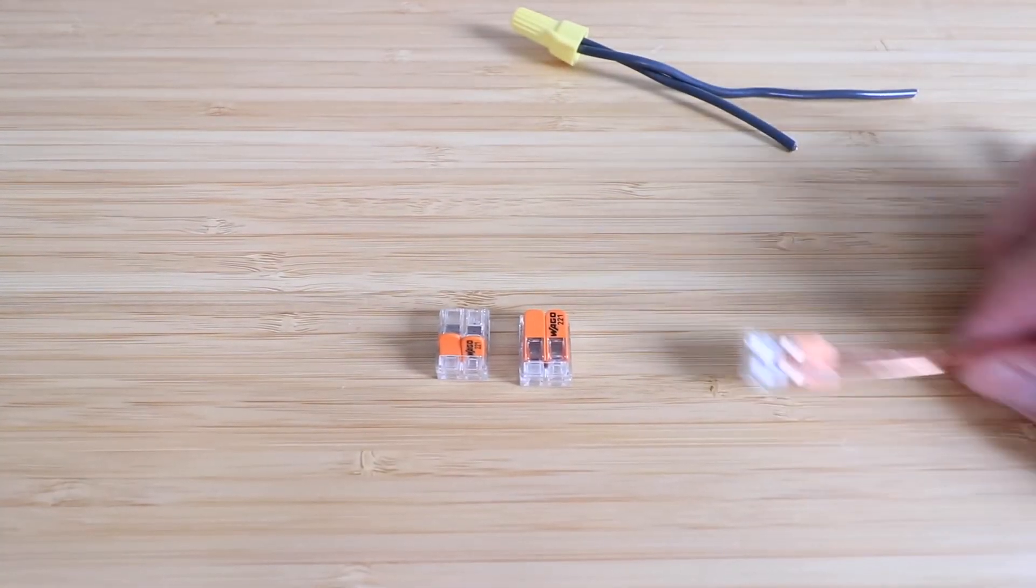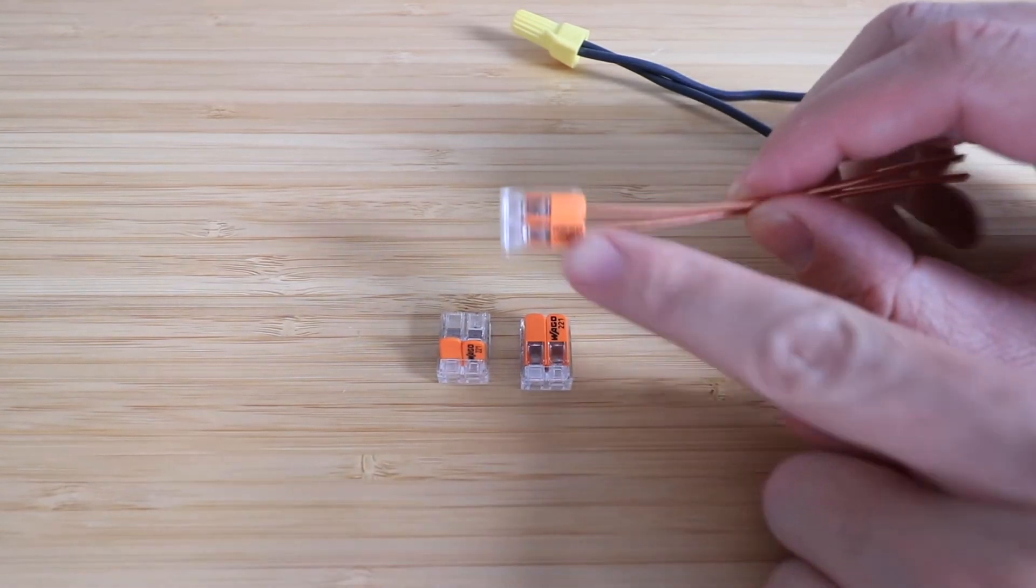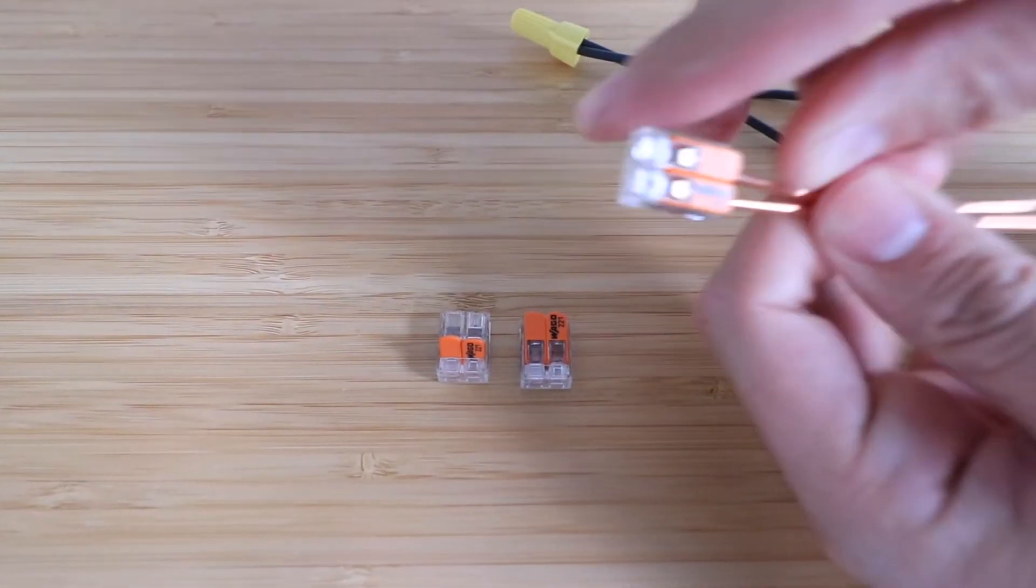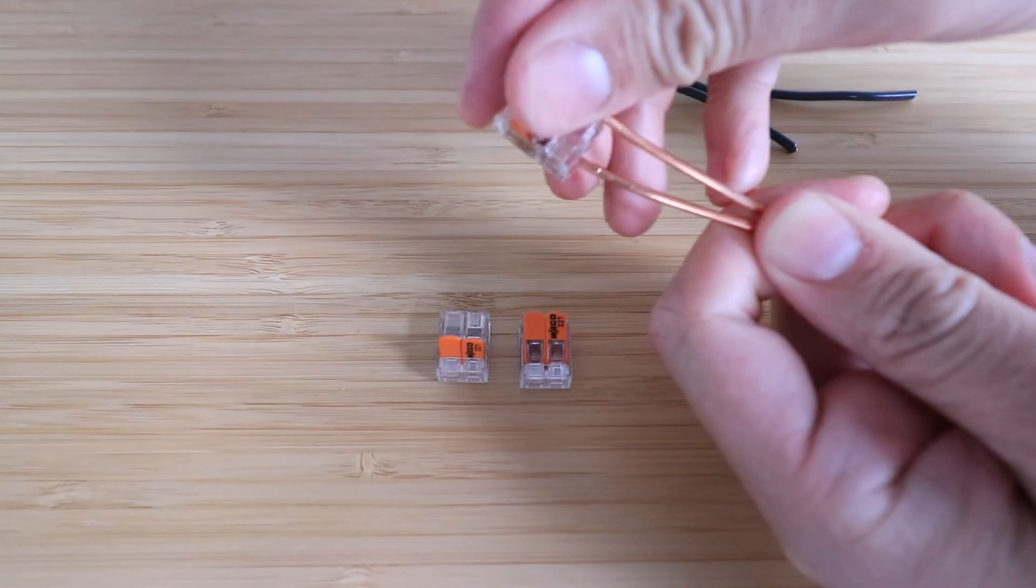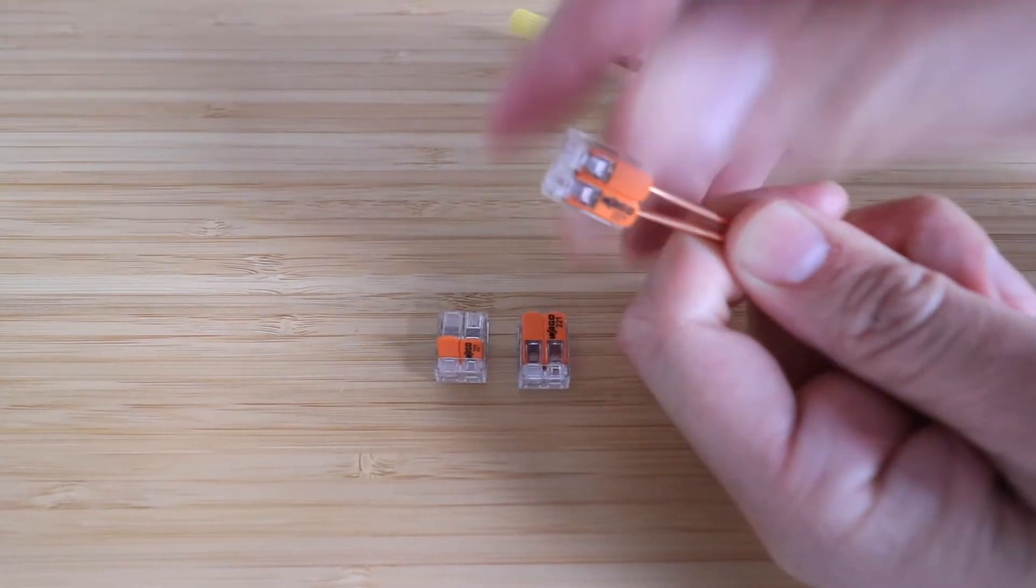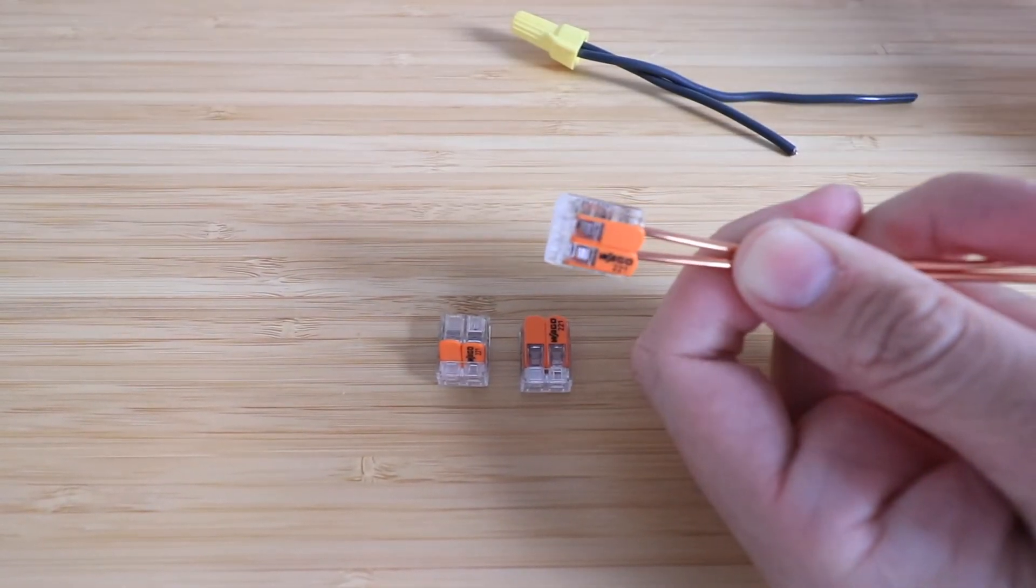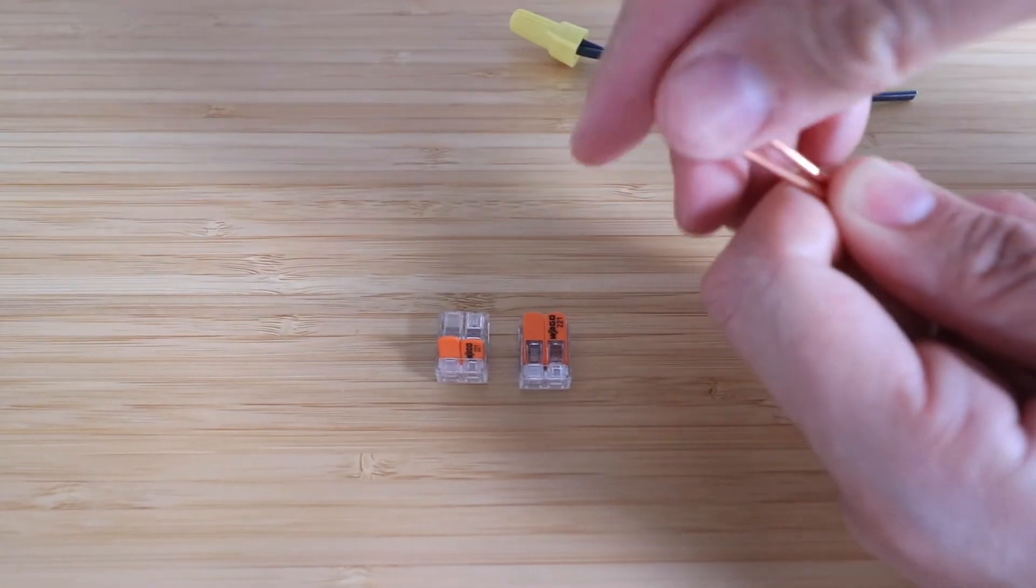Compared to the WAGO lever wire nuts, these are much faster, going to save you a ton of time. Look at that, I can just take it right off. I can put it right back on, takes me a second or two to do that. Super easy, super fast.